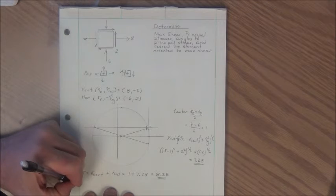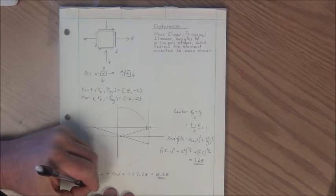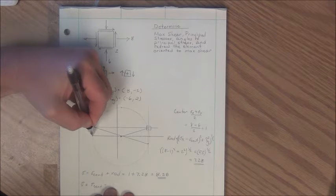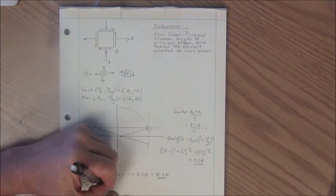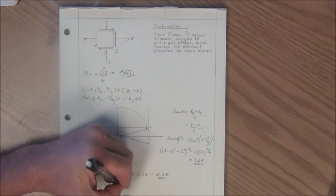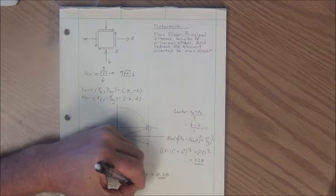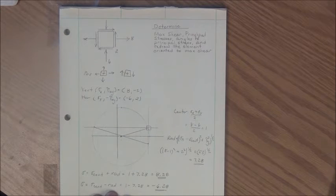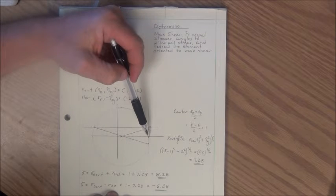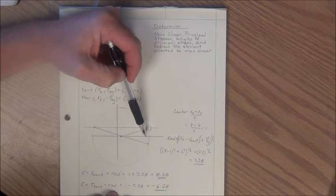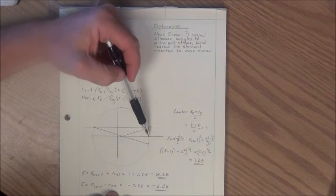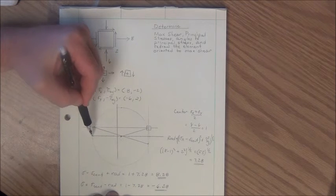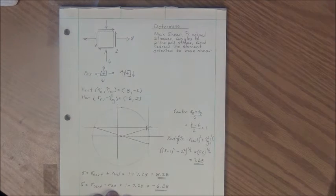The second principal stress is sigma center minus the radius: 1 − 7.28 = −6.28. To double-check: the circle crosses at about 8 and a little beyond, consistent with 8.28, and at about minus 6 and a little beyond, consistent with −6.28. The numbers make sense.